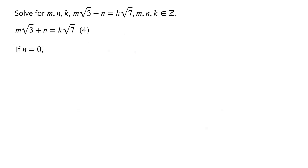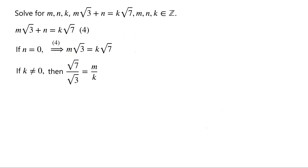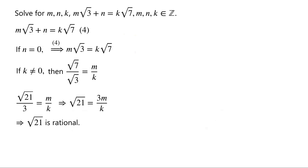If n = 0, then from the equation we have m√3 = k√7. If k ≠ 0, rearranging gives √7/√3 = m/k. Multiplying numerator and denominator of the left-hand side by √3, we get √21/3 = m/k, so √21 = 3m/k. Since m and k are integers, this implies √21 is rational.